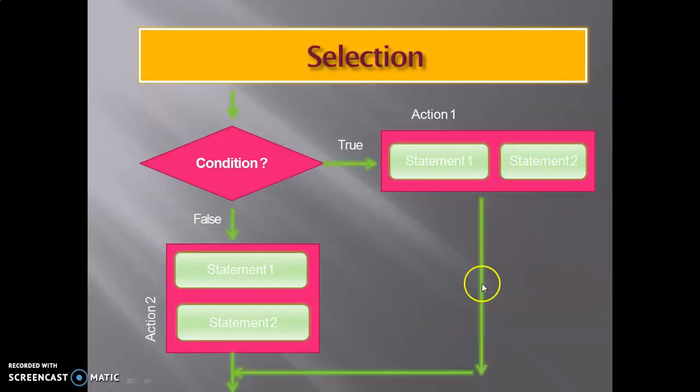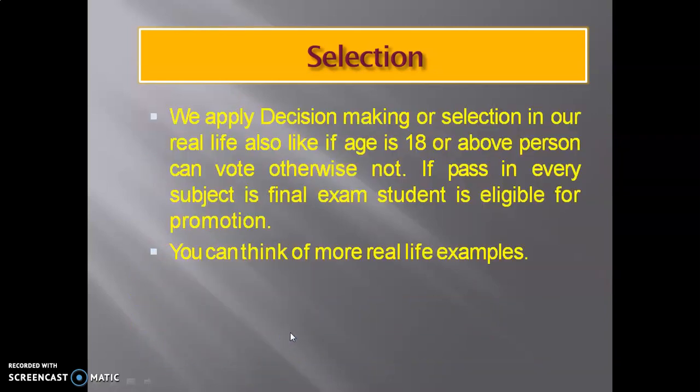This is the flowchart for selection conditions. Here we give the conditions. If true, then action 1, meaning a set of statements, will be executed. If the condition is false, then another set of statements will be executed. We apply decision making or selection in our real life also.